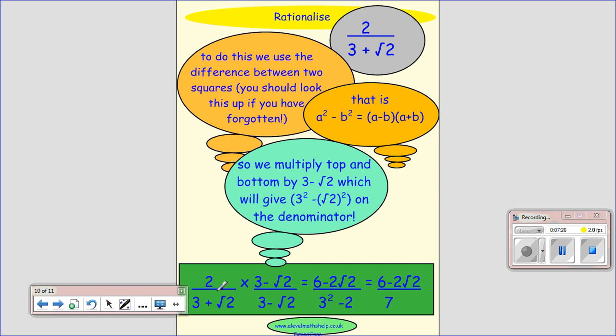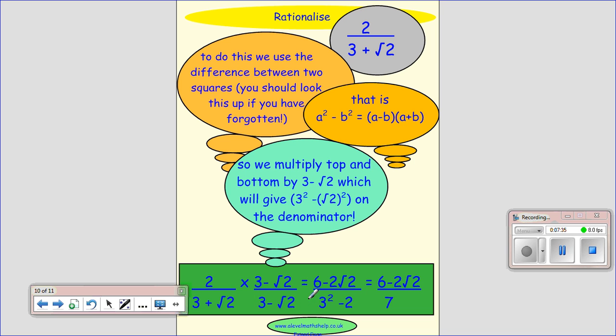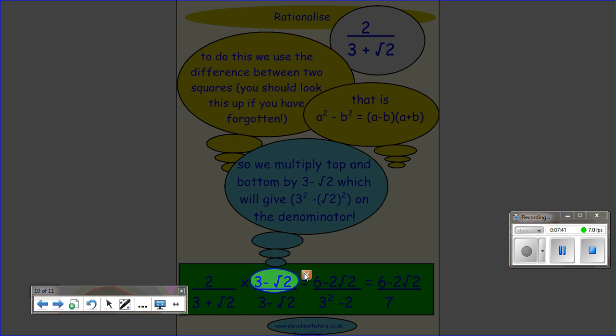So here we've got 2 over 3 plus root 2. We multiply it by 3 minus root 2, remembering that if we multiply the bottom by something, because we don't want to change our number, we're just writing it in a different form, we must multiply the top by the same thing.